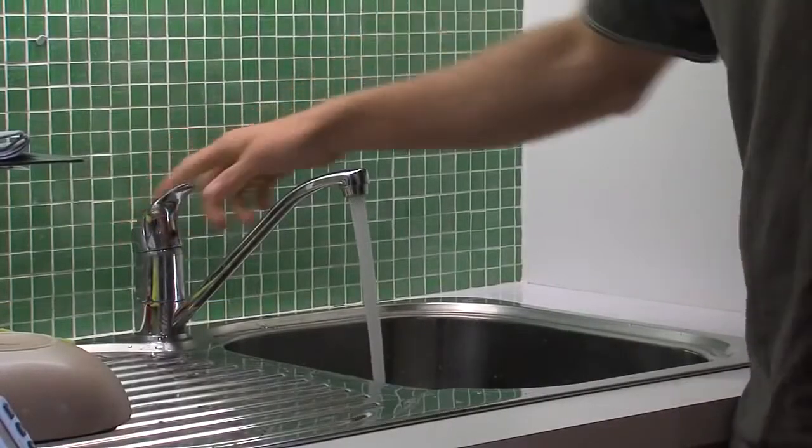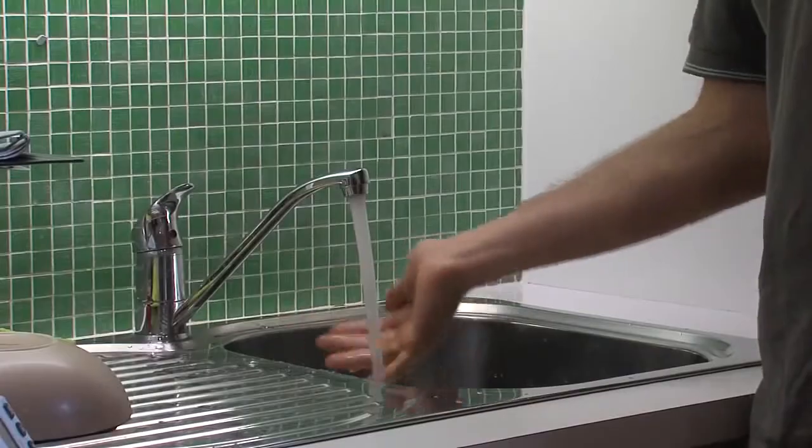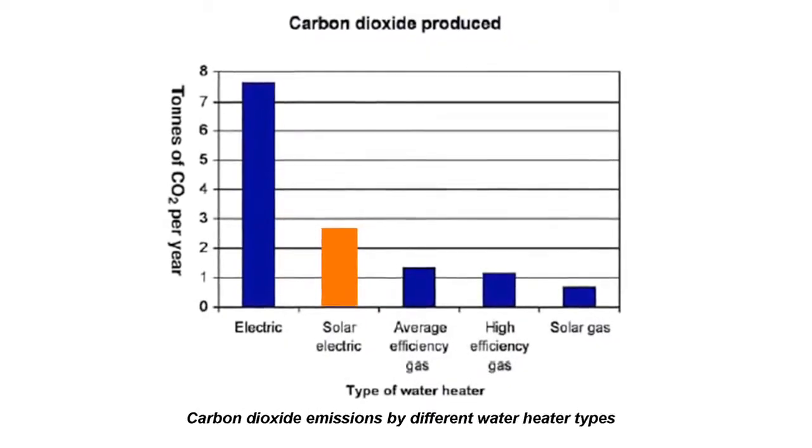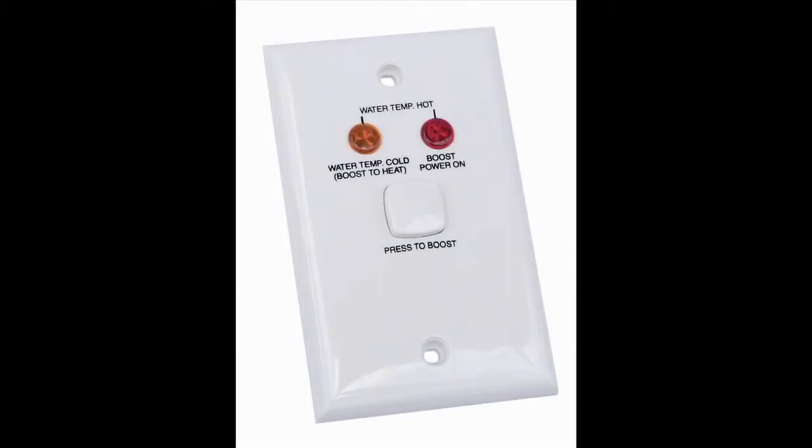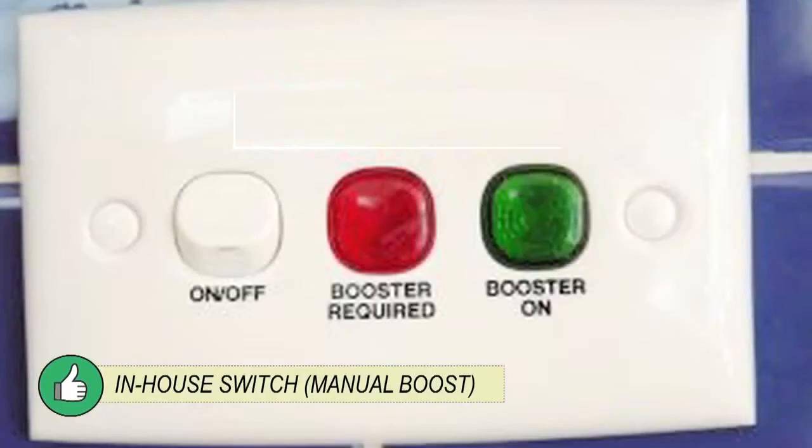The solar hot water system will require boosting at some times of the year. Electric boosters use a lot of power, so make sure the booster is controlled by a manual in-house switch. This switch should include a light to indicate when on.